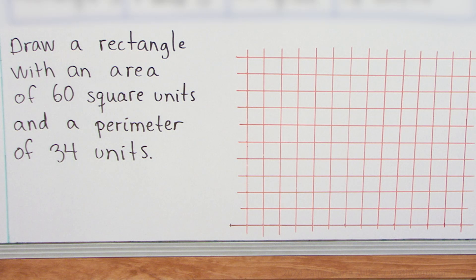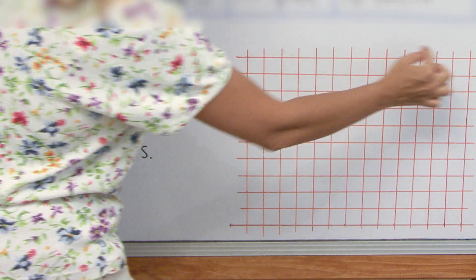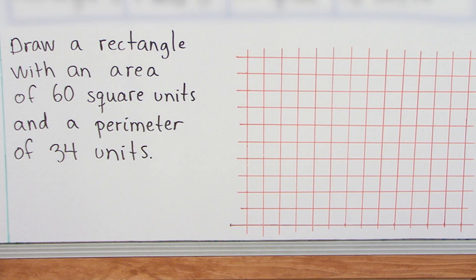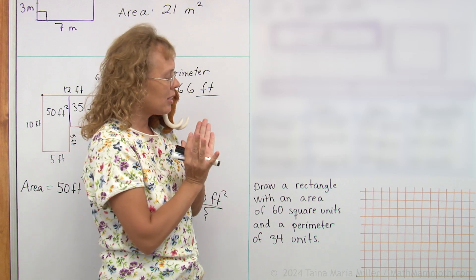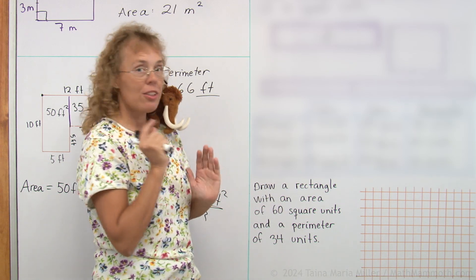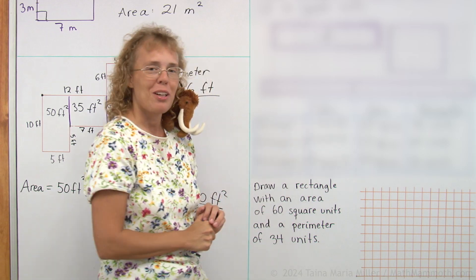Think about numbers that when you multiply them you get 60, such as 6 times 10. If you had a 6 times 10 rectangle, its area would be 60 square units. But would its perimeter be 34? 6 and 10. It means you would get 16, 16. You would get 32 as a perimeter, so that doesn't work.